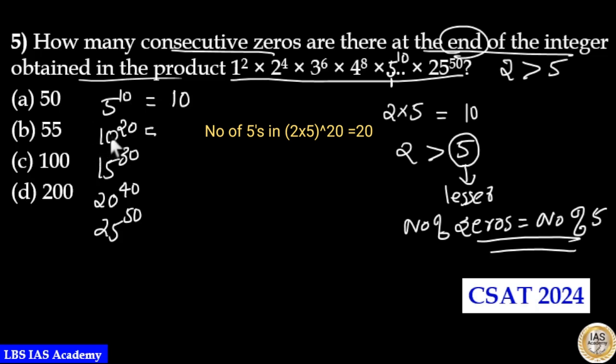These are multiples of 5, and in 5 raised to 10 there are 10 number of 5's. 10 raised to 20 means 2 into 5 equals 10, so there are 20 number of 5's. 3 into 5 is 15, there are 30 number of 5's in 15 raised to 30. 5 into 4 is 20, there are 40 number of 5's in 20 raised to 40. But 5 squared raised to 50 is 25 raised to 50, so there are 50 into 2, which is 100 fives in 25 raised to 50.